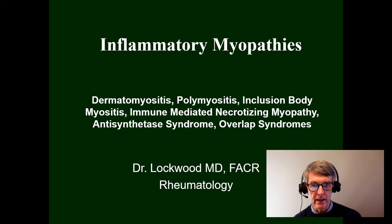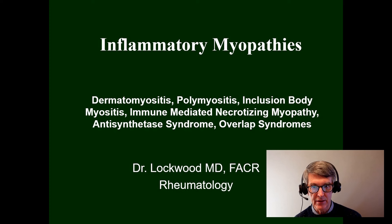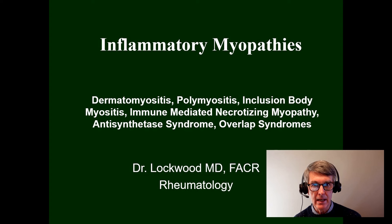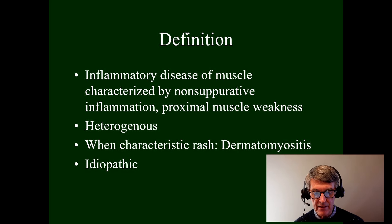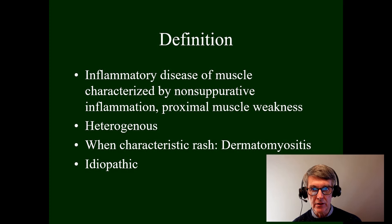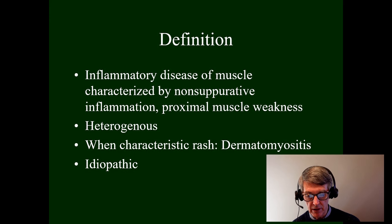Today we will be discussing the idiopathic inflammatory myopathies, which comprises dermatomyositis, polymyositis, inclusion body myositis, immune-mediated necrotizing myopathy, anti-synthetase syndrome, and overlap syndromes. These are inflammatory diseases of the muscle characterized by non-suppurative inflammation and proximal muscle weakness. They are heterogeneous. When there is a characteristic rash it is called dermatomyositis, and they are idiopathic, meaning we don't know the cause.